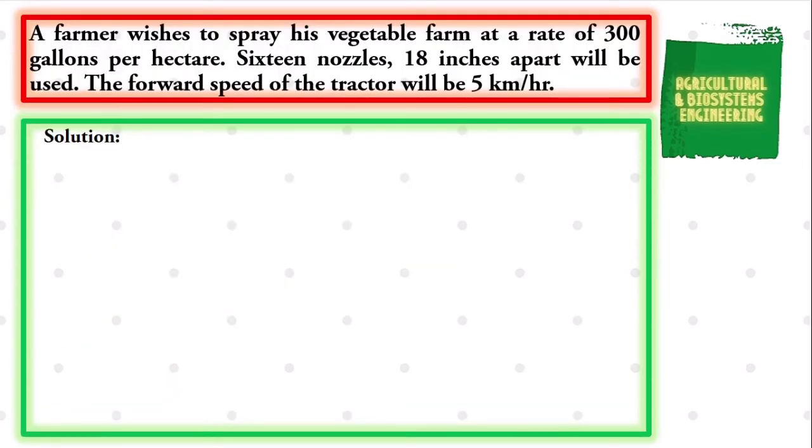The first value that we are going to solve is the field capacity. The formula to solve its value is FC equals S multiplied to W all over 10, wherein FC is the field capacity, S is the speed in kilometers per hour, and W is the width in meters.